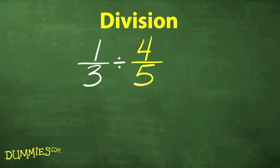Start by turning the second fraction, or the divisor, upside down, making it into a reciprocal fraction. For example, 4 fifths becomes 5 fourths.